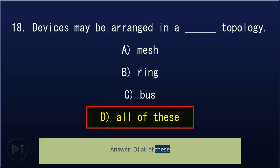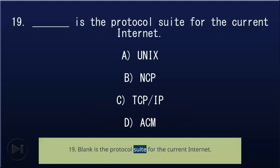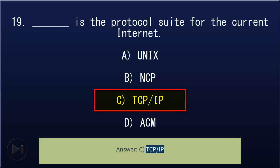19. Blank is the protocol suite for the current internet: A) UNIX, B) NCP, C) TCP/IP, D) ACM. Answer: C, TCP/IP.